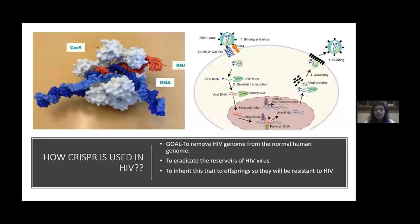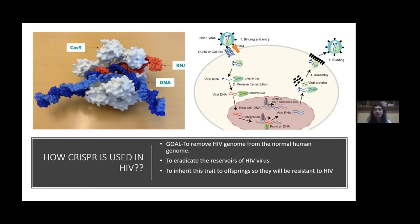Now, how is this used in HIV? This is the model given by Dr. Jennifer Doudna, co-inventor of CRISPR, at a conference. The white structure is the Cas9 protein carrying the guide RNA in orange, and the DNA is in blue. The main goal of using this in HIV treatment is to remove the HIV genome from the normal human genome, and mainly to eradicate the reservoirs of HIV virus — something antiretroviral therapy cannot do — and also to pass this trait to offspring so they become resistant to HIV, achieving total eradication.